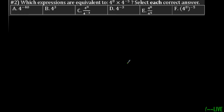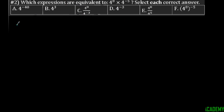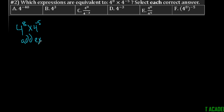For number two, it says which expressions are equivalent to four times four to the eighth power times four to the negative fifth power. Notice it has plural, so we're going to have multiple answers. If I look at the expression, I can take four to the eighth power times four to the negative fifth power and add the exponents, getting four to the eight plus negative five, which is four to the third power. So our goal is to get this answer.